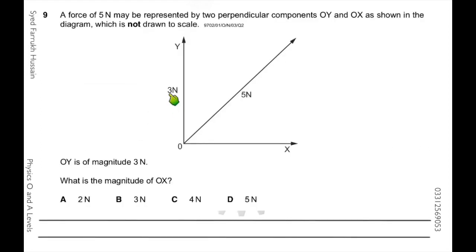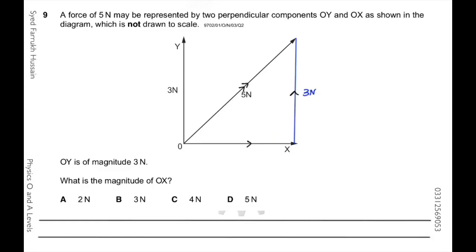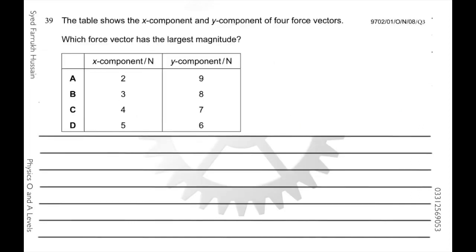The vertical force and resultant are given; find the horizontal force. Completing the triangle: the resultant is 5 newtons and the vertical component is 3 newtons. Using Pythagoras theorem: 5² = 3² + x², so 25 = 9 + x², giving x equals 4 newtons.